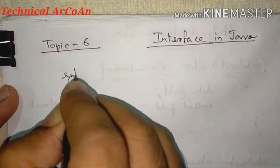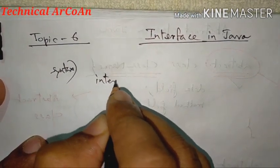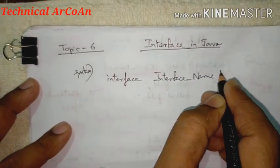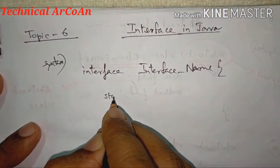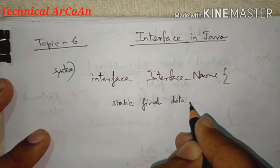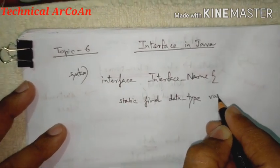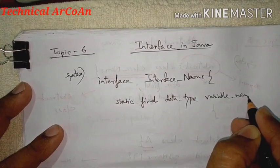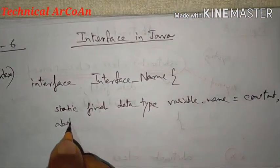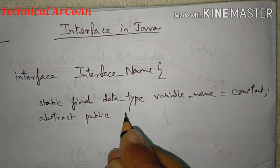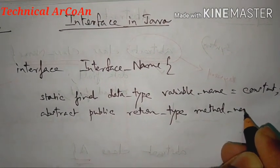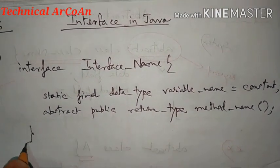So what will be the syntax of an interface? It will be like: interface, then the interface name. We define the members as static final, then the data type and the variable name equal to a constant. And the method will be: abstract public, with some return type, then the method name, and there should be no body — only the declaration.